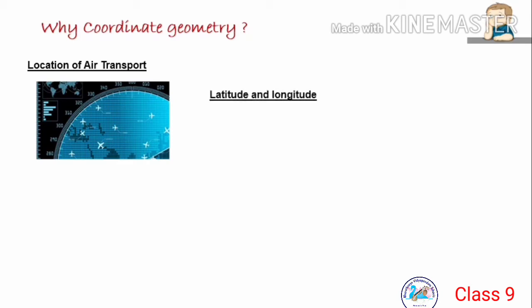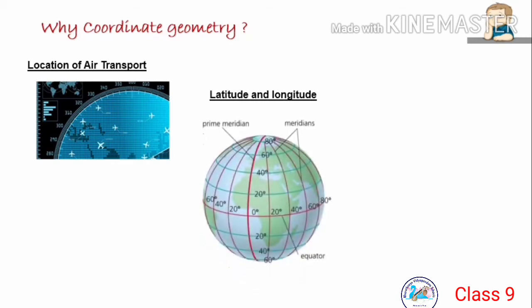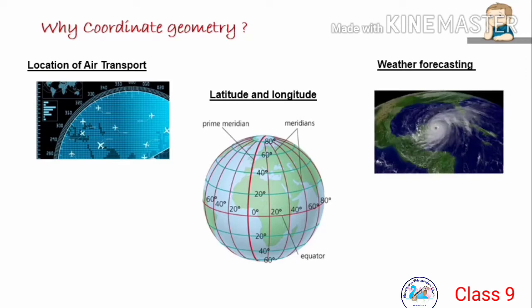Next, we use coordinate geometry in geography, that is latitude and longitude. These latitude and longitude are called geographical coordinates, which you might have studied in geography. These measurements are actually used to accurately point or place an object on the earth. And the next application is in weather forecasting. Forecasters track hurricanes and predict their path using geographical coordinates, that is latitude and longitude.